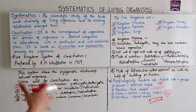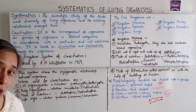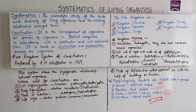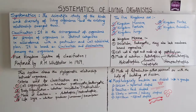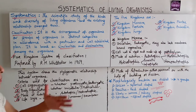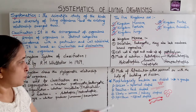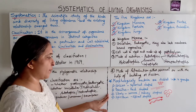Mode of reproduction in Monera is either asexual or by budding and fission. Morphologically, bacteria are divided into four groups based on structure: coccus (spherical shape), bacillus (rod shape), vibrio (comma or kidney shape), and spirillum (spiral shape).